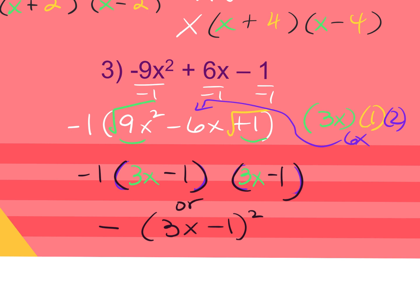WebAssign accepted either way — you could write two binomials or enter it as 3x minus 1 squared. Remember, whenever you factor a perfect square trinomial, it always gives you a binomial squared or the same binomial repeated. We could also have done traditional factoring: multiply 9x squared and 1, find factors of 9 that give negative 6, which would be negative 3 and negative 3, then factor by grouping. That method works as well.